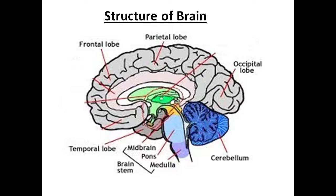The brain is divided into three main sections: cerebrum, cerebellum, and brainstem. The brainstem consists of the medulla oblongata, pons, midbrain, and diencephalon.